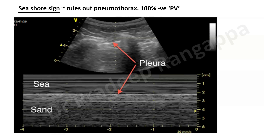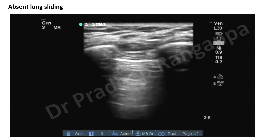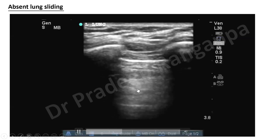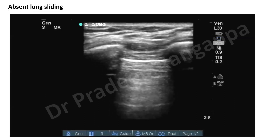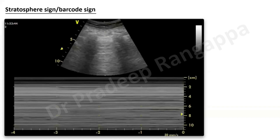Once you see the lung sliding sign, you put an M-mode: place a cursor and press M-mode. You then get something called the seashore sign. The sea represents the musculoskeletal thoracic wall, and the sand represents the normal lung. The seashore sign indicates no pneumothorax — lungs have no overt pathology from air pockets. Normal lung looks like sand in M-mode.